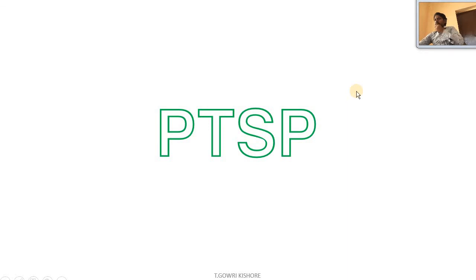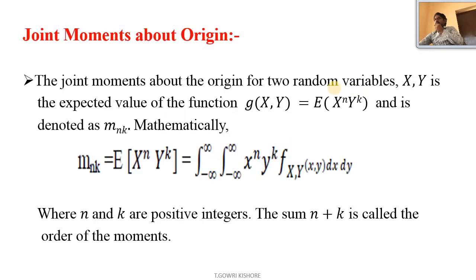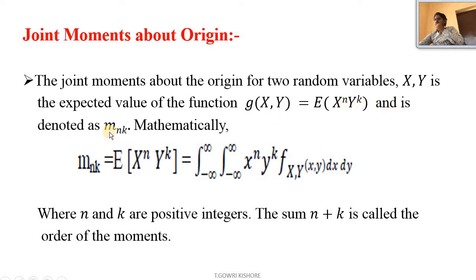Good morning to all. Today the concept is joint moment about the origin. The joint moment about the origin for two random variables x, y is the expected value of the function g of x, y equal to expectation of x power of n into y power of k, and is denoted as m n k mathematically.